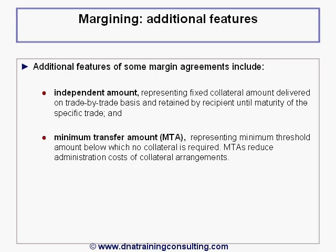Minimum Transfer Amount, or MTA, represents a minimum threshold amount below which no collateral is required. MTAs reduce the administration costs of collateral arrangements.